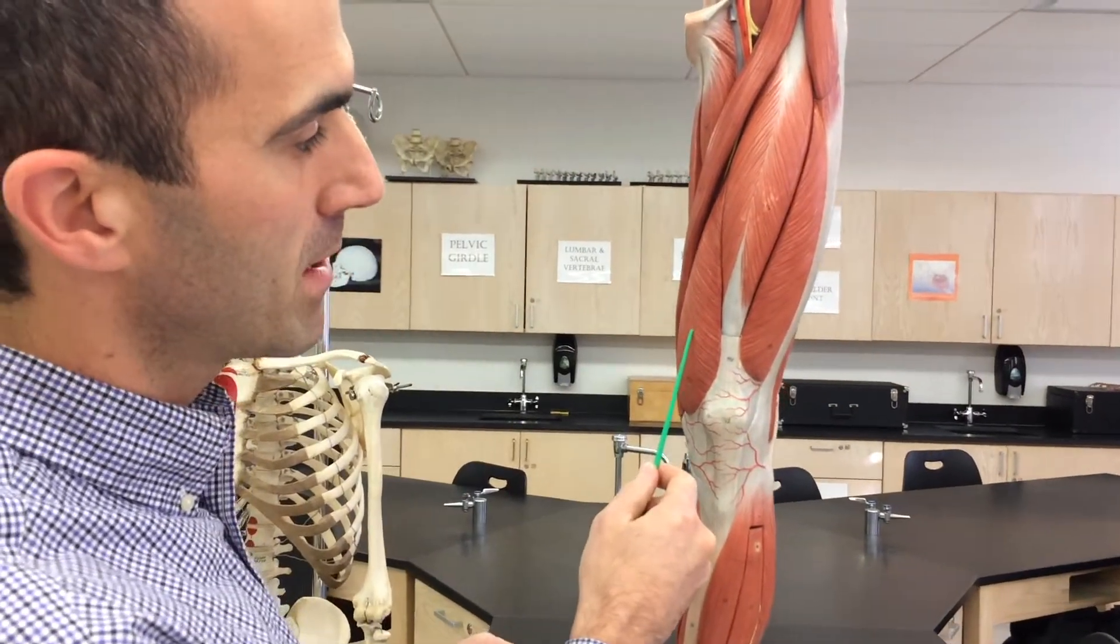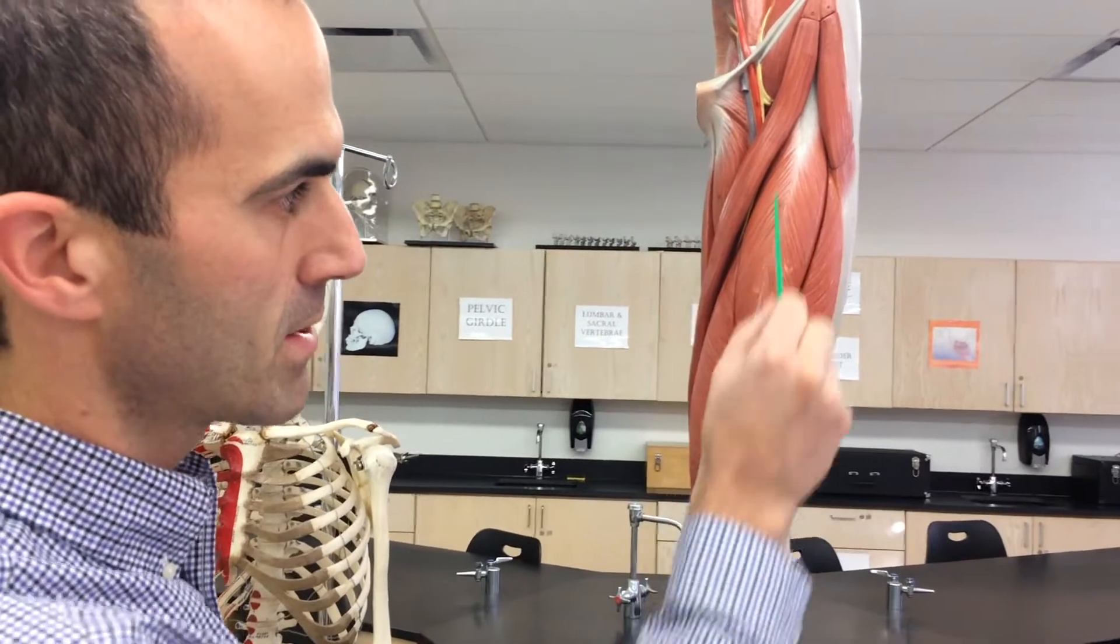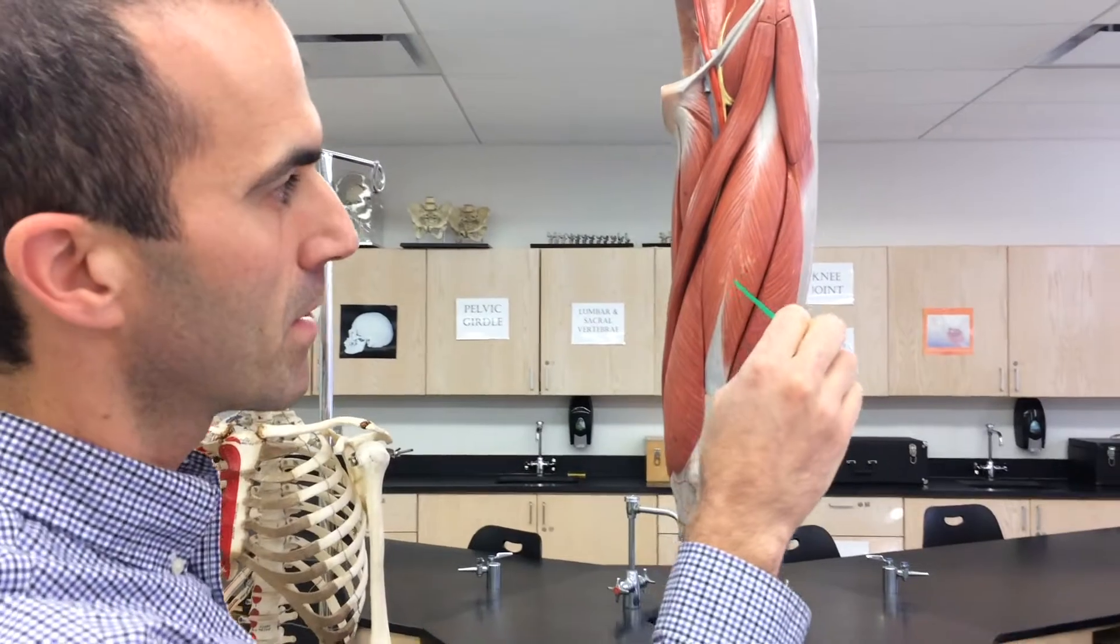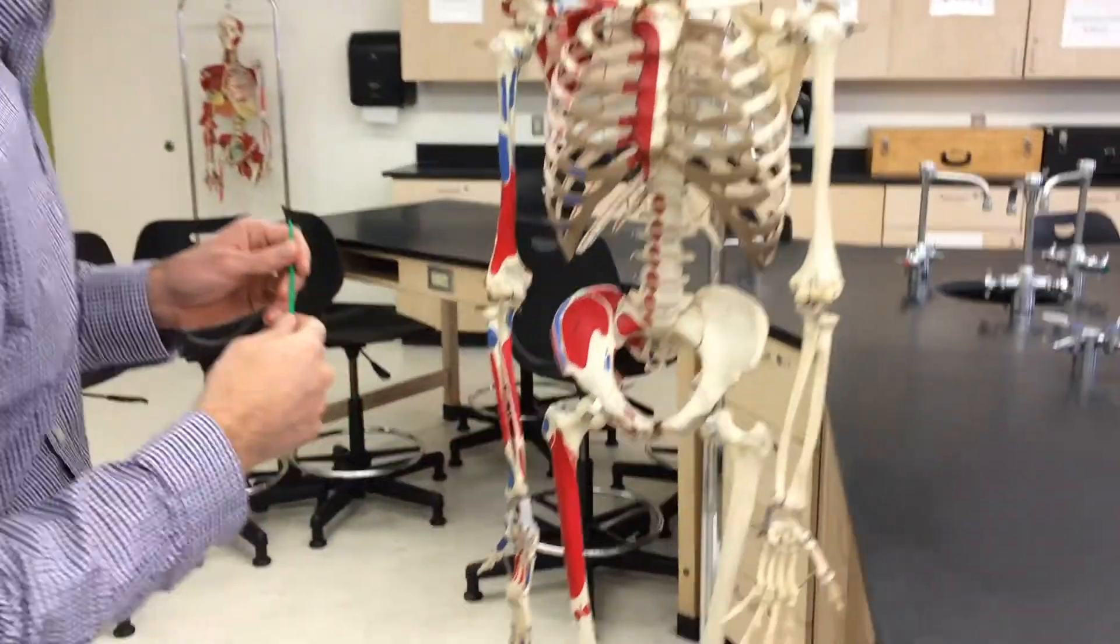Vastus medialis is medial, vastus lateralis is lateral. Rectus femoris, the one you're seeing right here straight on the femur, rectus femoris. And vastus intermedius is deep. So you'll see three of them here, but again, there are four of them.